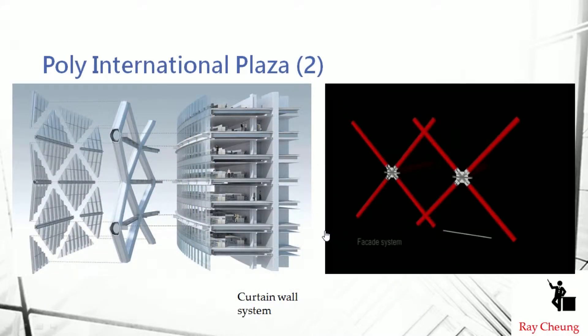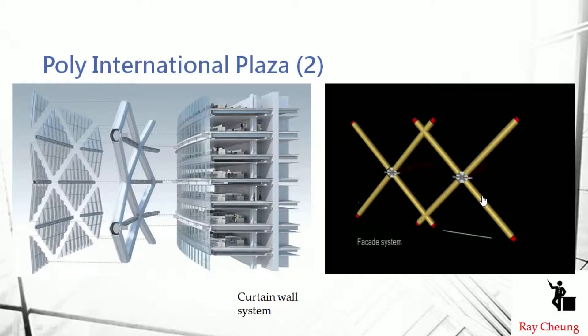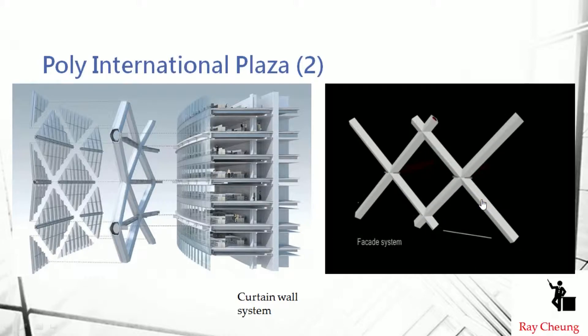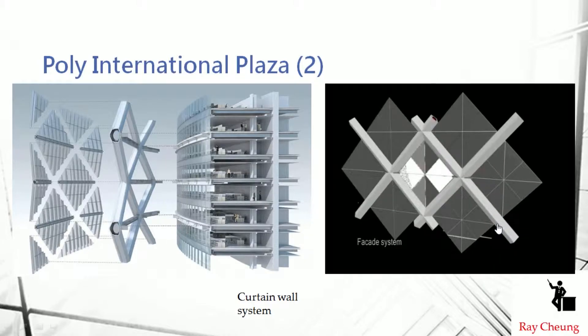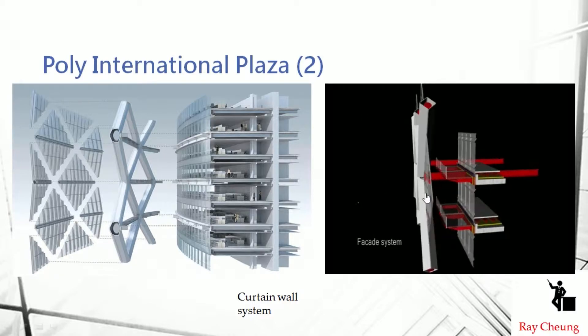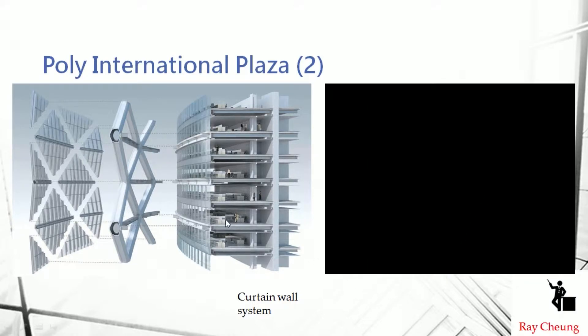You can take a look at this one. Sometimes we provide the aluminum cladding to protect the facade, and sometimes we provide double layers to let the air conditioner try to reduce the air conditioner power.